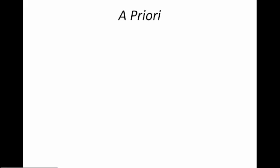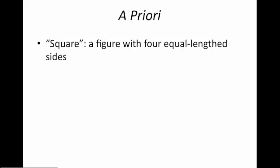Take a priori reasoning first. Here's an example: the meaning of the word square is a figure with four equal-length sides. I could not understand the sentence 'the square on the board is red' without knowing what the word square means.